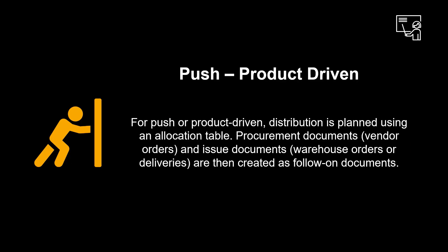For push or product-driven distribution, planning is done using an allocation table. Procurement documents — vendor orders — and issue documents — warehouse orders or deliveries — are then created as follow-on documents.